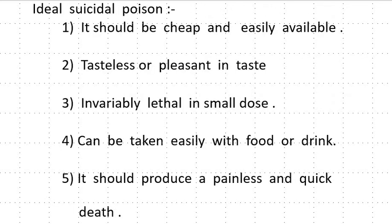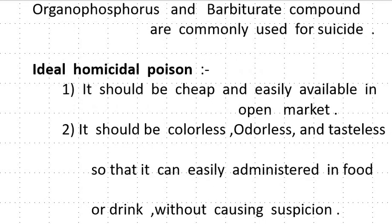What is the ideal suicidal poison? The features of an ideal suicidal poison are: it should be cheap and easily available; it should be tasteless or pleasant in taste; invariably lethal in small doses; can be taken easily with food or drink; and it should produce painless and quick death. Organophosphorus and barbiturate compounds are commonly used for suicide.